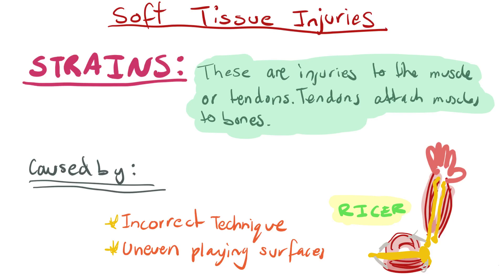Moving on to strains — these are injuries to the muscle or tendons. Tendons attach the muscles to the bone, so a strain happens to either the muscle or the tendon attaching the muscle to the bone. These are caused by incorrect technique or uneven playing surfaces, and the treatment for strains is RISA.